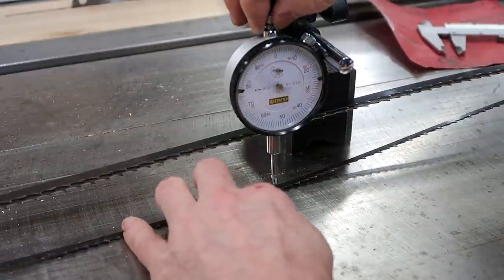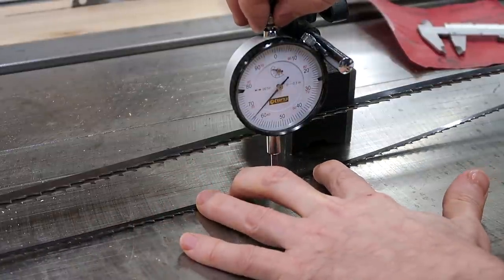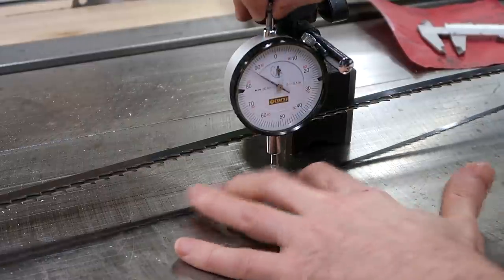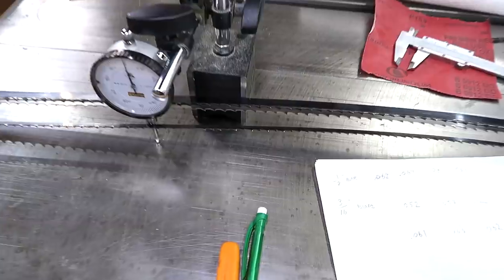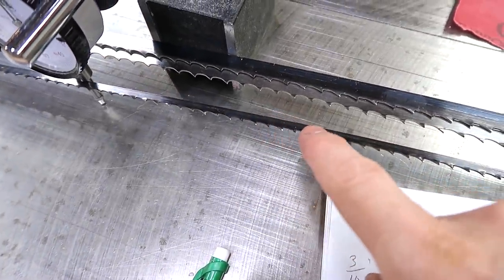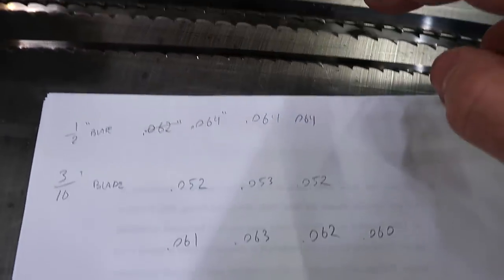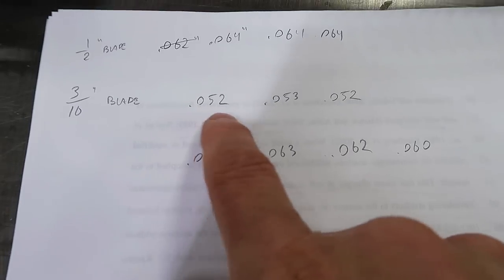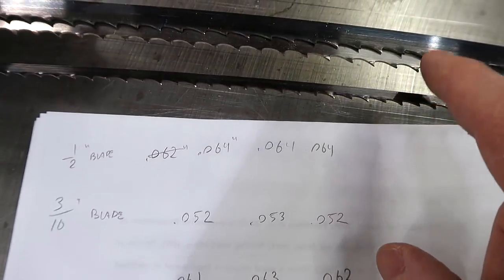And finally that troublesome blade. 61. 63. 62. I think that slight inconsistency has more to do with the teeth being harder to hit because they're smaller. But at any rate, the blades that chatter more have got about 10 thou more set to them than the 3/16 inch blade that works much better.